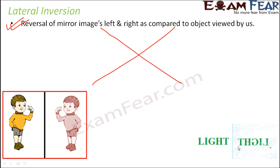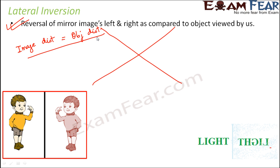How does this reversal happen? It is based on a simple concept we learned earlier: image distance is always equal to object distance in the case of a plane mirror. That means the distance of the object from the mirror equals the distance of the image from the mirror.